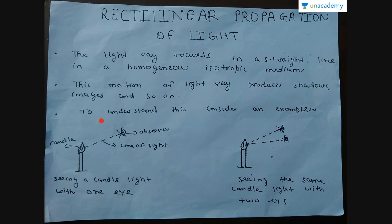To understand this, consider an example — this candle. From this candle, a ray is coming; rather, an infinite number of rays are coming. However, only a small fraction of these enter our eyes. Our brain can deduce from this single ray that the flame lies somewhere along this line of sight, at the end of this line of sight.